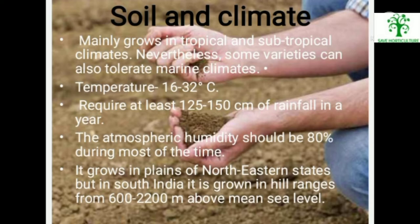Soil and Climate. Tea mainly grows in tropical and subtropical climates; nevertheless, some varieties can also tolerate marine climates. The required temperature is 16 to 32 degrees centigrade. It requires at least 125 to 150 centimetres of rainfall per year. The atmospheric humidity should be 80% during most of the time.